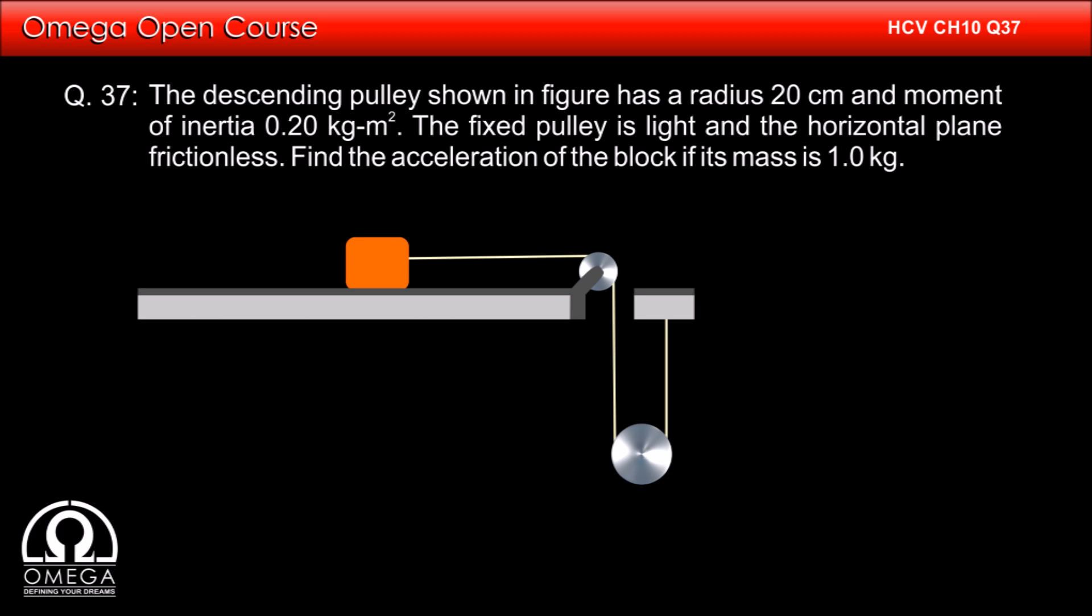The descending pulley shown in figure has a radius of 20 cm and moment of inertia is 0.2 kg m². The fixed pulley is light and the horizontal plane frictionless. Find the acceleration of the block if its mass is 1 kg.